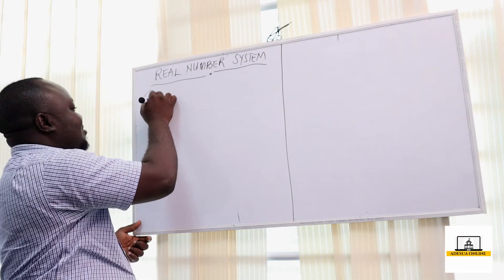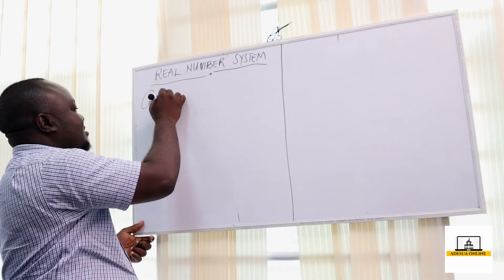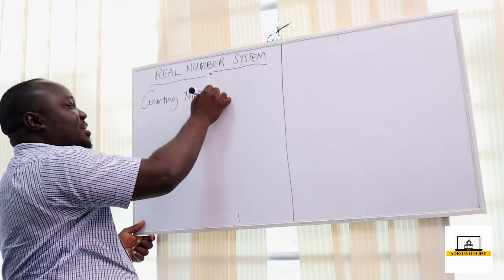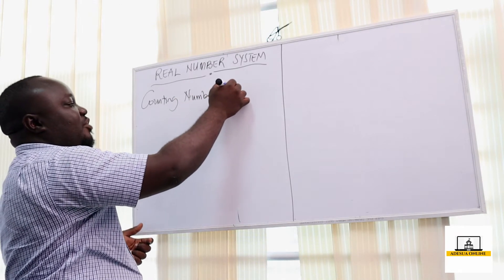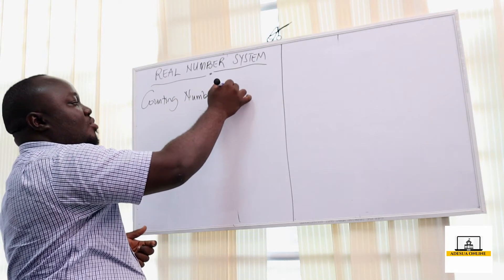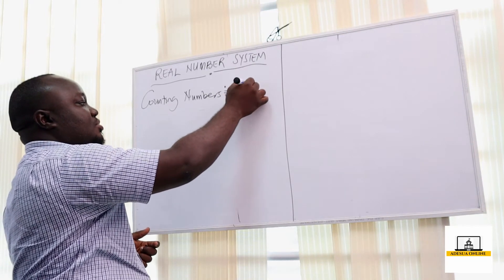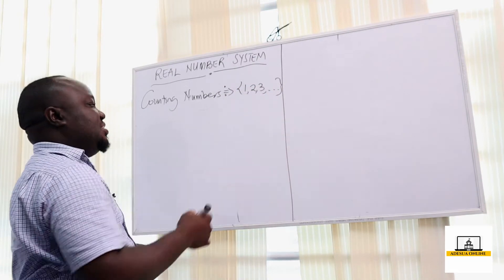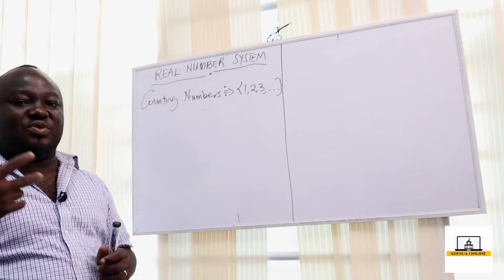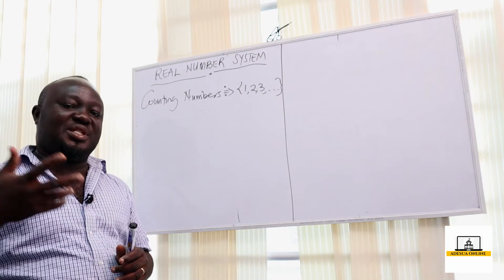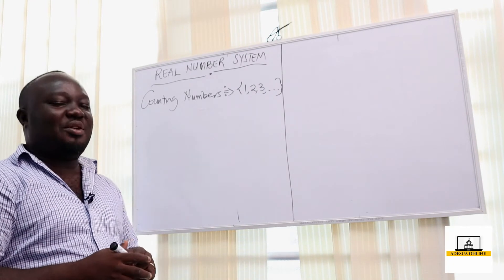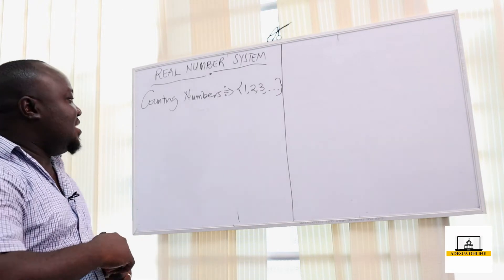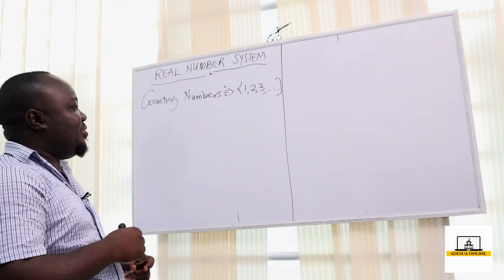They would count 1, 2, 3 — those are the set of counting numbers. Counting numbers start from 1, 2, 3 to infinity, so we can have 1, 2, 3, 4, 5, 6. We call them the set of counting or natural numbers.